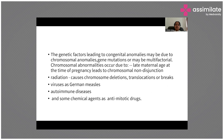Genetic factors leading to congenital anomalies include chromosomal anomalies, gene mutations, or multifactorial causes. Chromosomal abnormalities can occur due to late maternal age, leading to chromosomal non-disjunction. If a karyotype is normal, defects may still arise from gene mutation or multifactorial causes. Radiation exposure can cause chromosome deletions, translocations, or breaks. Viruses such as German measles, autoimmune diseases, and anti-mitotic chemical agents are also implicated.